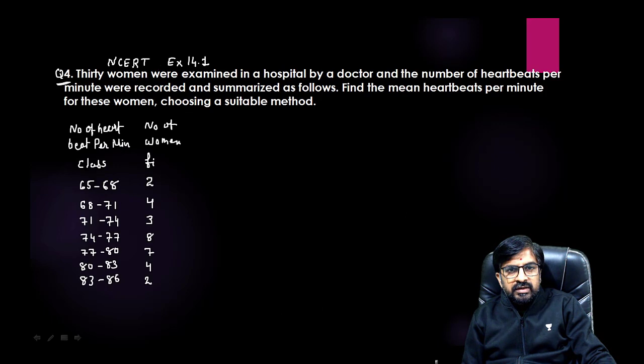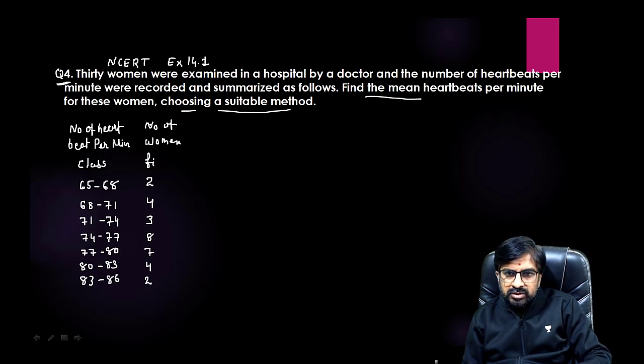NCERT chapter 14 Statistics exercise 14.1 question number 4. 30 women were examined in a hospital by a doctor and the number of heartbeats per minute were recorded and summarized as follows. Find the mean heartbeats per minute of these women using or choosing a suitable method. Please keep this in mind, either direct or assumed mean method. Step deviation method is removed by board this year but I think after few years they can start. I had made separate videos for that also.